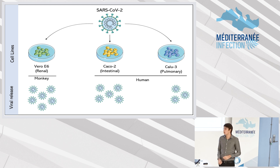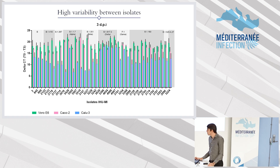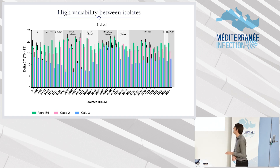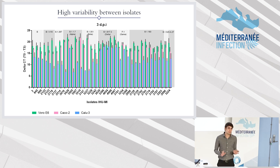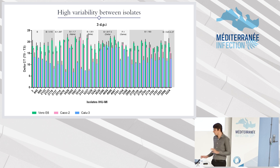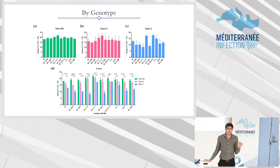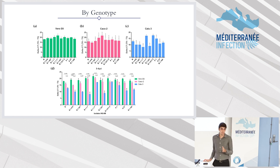Vero, Caco-2 which is an intestinal cell, and Calo-3 which is a pulmonary cell. And we evaluated the viral release of these by PCR. What you have is a range of isolates from different variants, and the conclusion of this figure is basically that there is a high variability between the isolates. So now I will merge them in variants so we can have a look. For Vero E6 cells we don't see difference between any variant, because these viruses are produced and isolated in Vero cells so they are adapted to it.